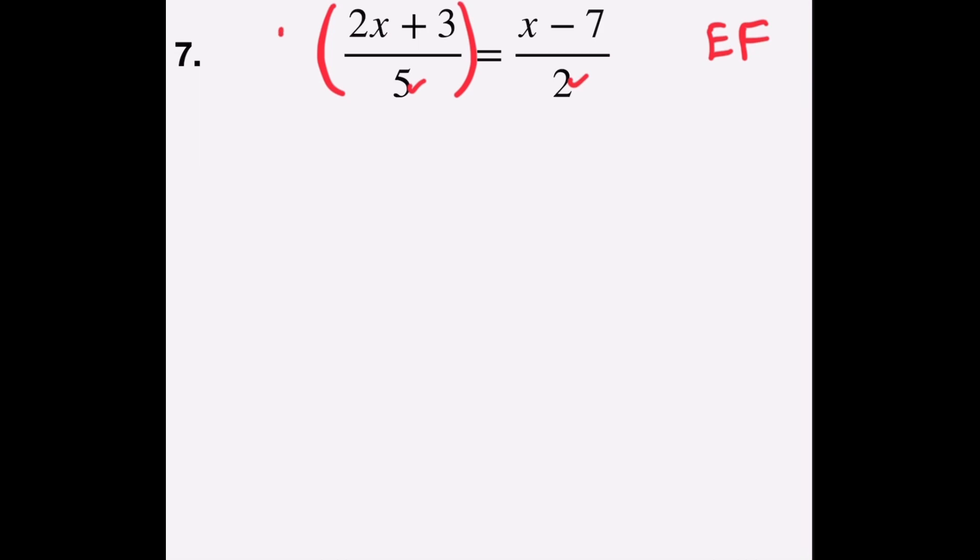So I'll multiply the left side by 10 and the right side by 10. It may be easier if I put 10 over 1 so you can see it. Now I'm going to take 5 and ask myself, how many times does 5 divide into 10? That's 2. So I have 2 times the numerator, which is 2x plus 3. So I've eliminated the fraction on the left side.